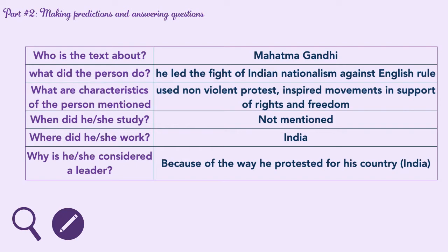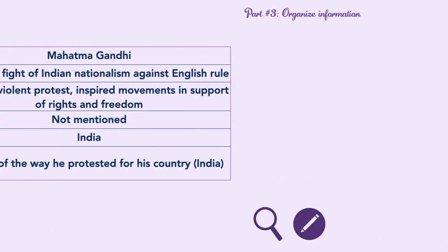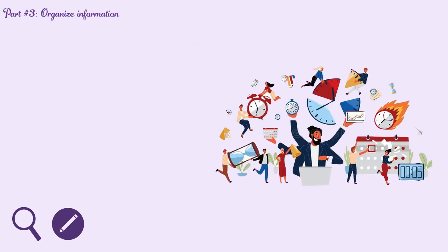When did he or she study? That is not mentioned. Where did he or she work? In India. Why is he or she considered a leader? Because of the way he protested for his country, India. Now that we know the key concepts and how to answer questions, let's have a look at how to organize information.